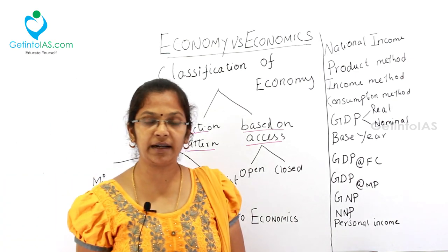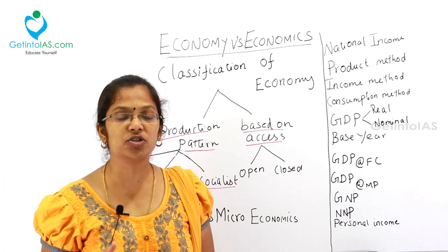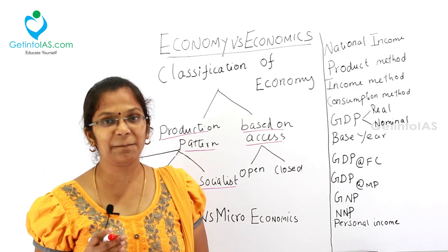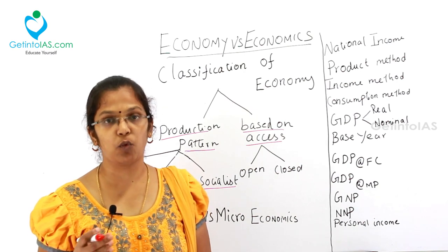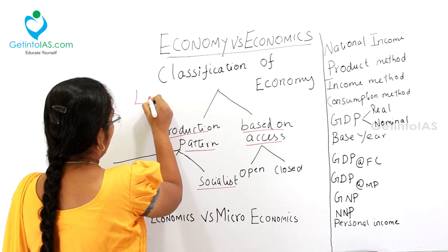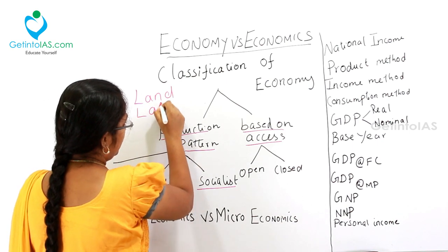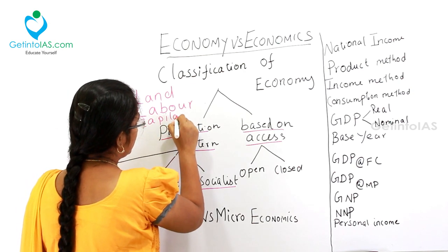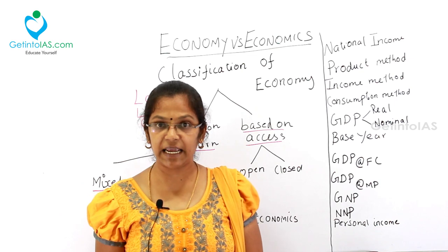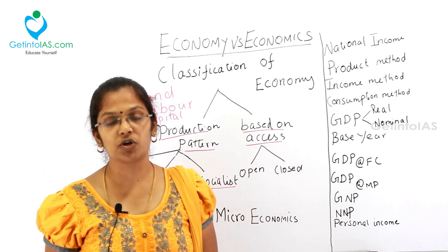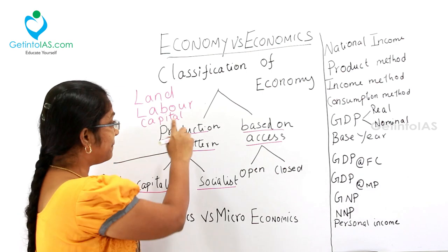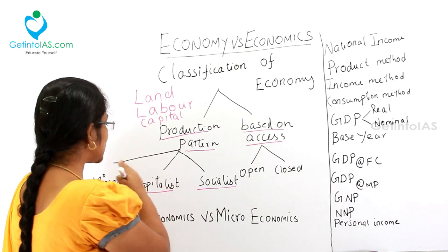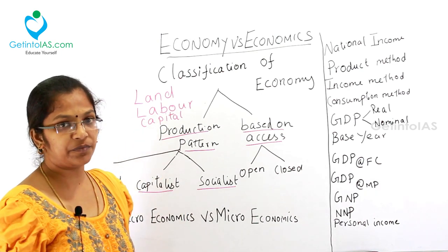Before going into that, we need to know what are the factors of production. If you want to produce something, there are basic factors which you need. Those are land, labor and capital. We call land, labor and capital as the factors of production. Based on the production pattern, the economy is classified into mixed, capitalist and socialist economy.